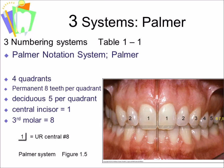Starting with the central incisors, we number the teeth one through eight. So in each quadrant there are eight teeth, and the highest number in the Palmer System is eight. Orthodontists tend to use the Palmer System more so than the Universal System.